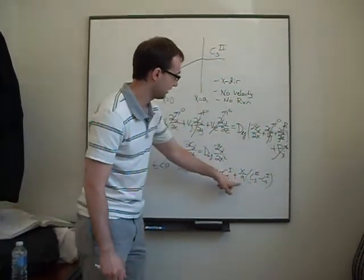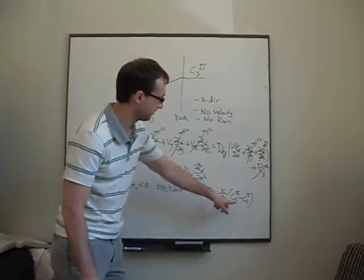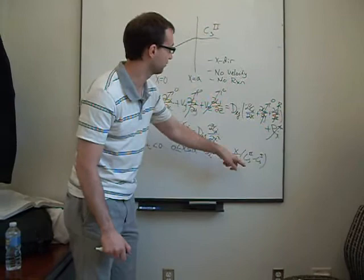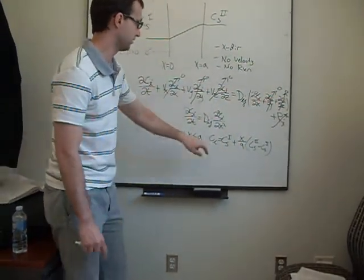If we're at x equals A, x equals A would be one right here. You'd have cs2 minus cs1. These two would cancel off. You're left with cs2. You're left with that point. So that makes sense. So this is your first initial condition.